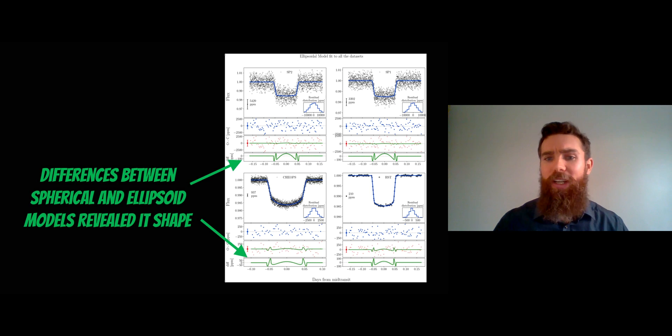The green lines at the bottom there show the difference between the spherical model and the ellipsoid model. It turns out that the ellipsoid model fits better to the transit shape of this particular exoplanet. That is what has revealed that it's actually not spherical and is rugby ball shaped. It's quite an elongated planet.